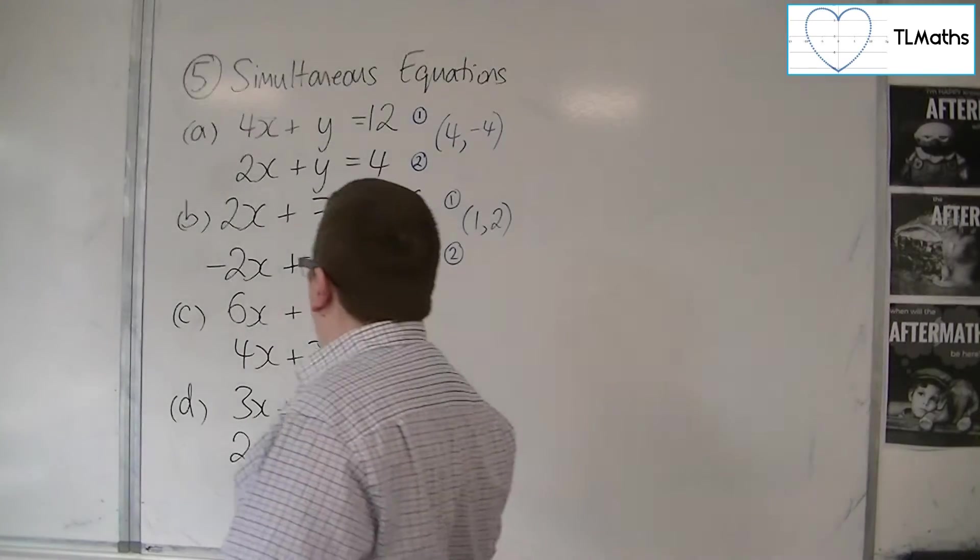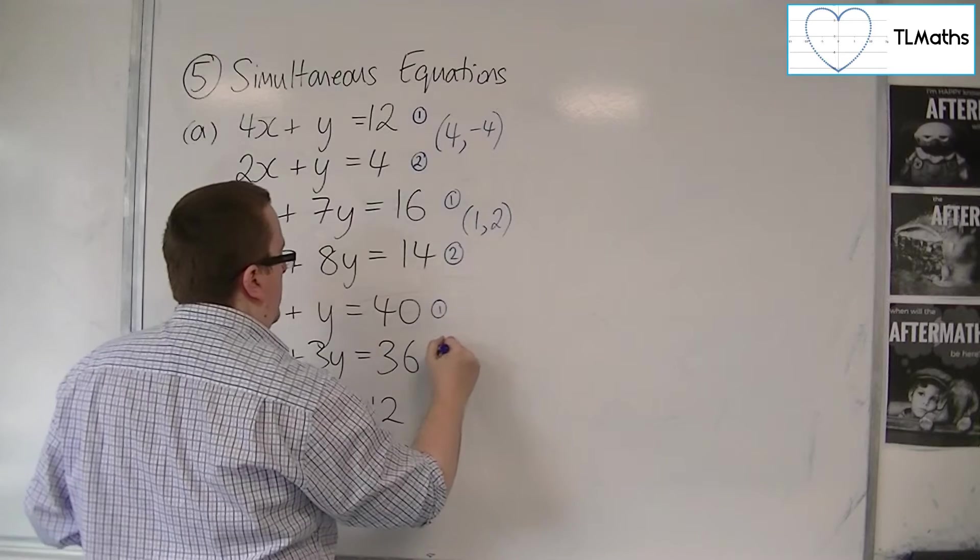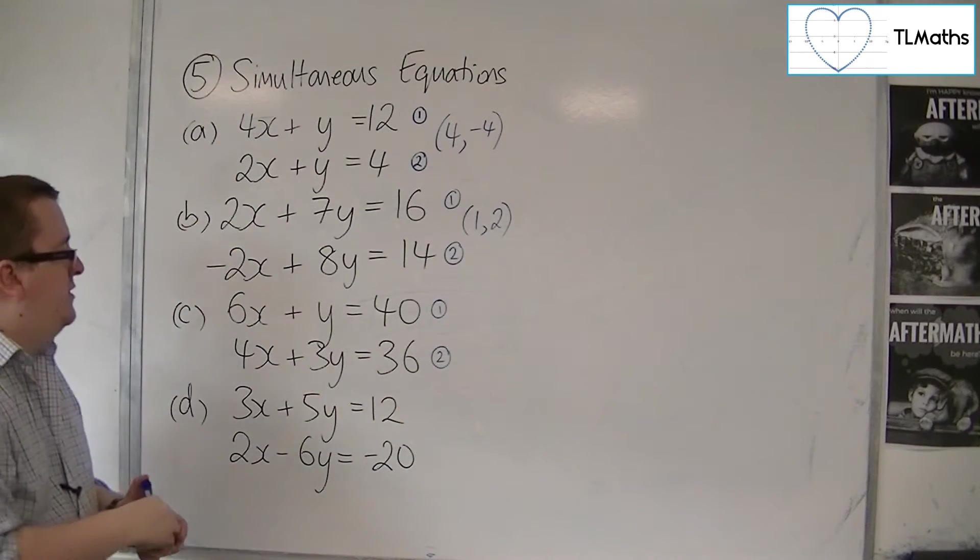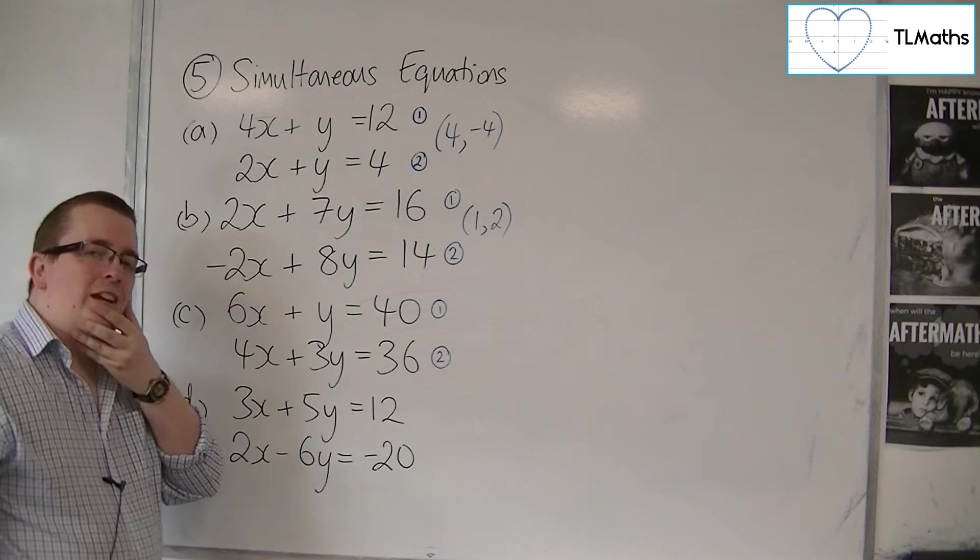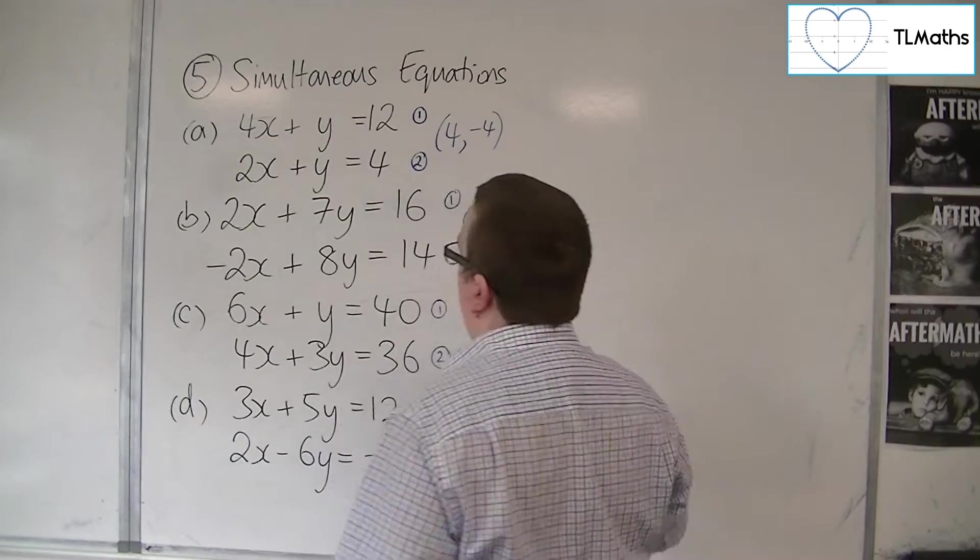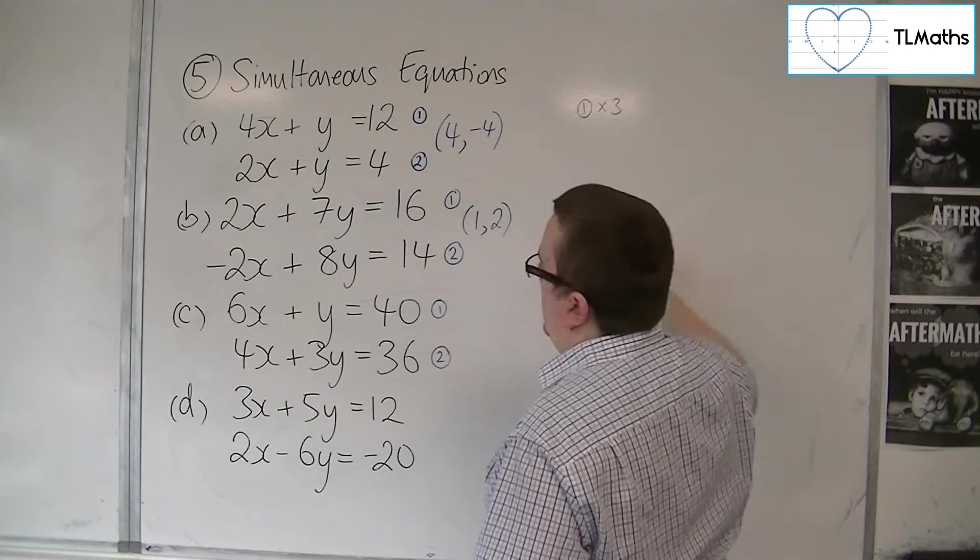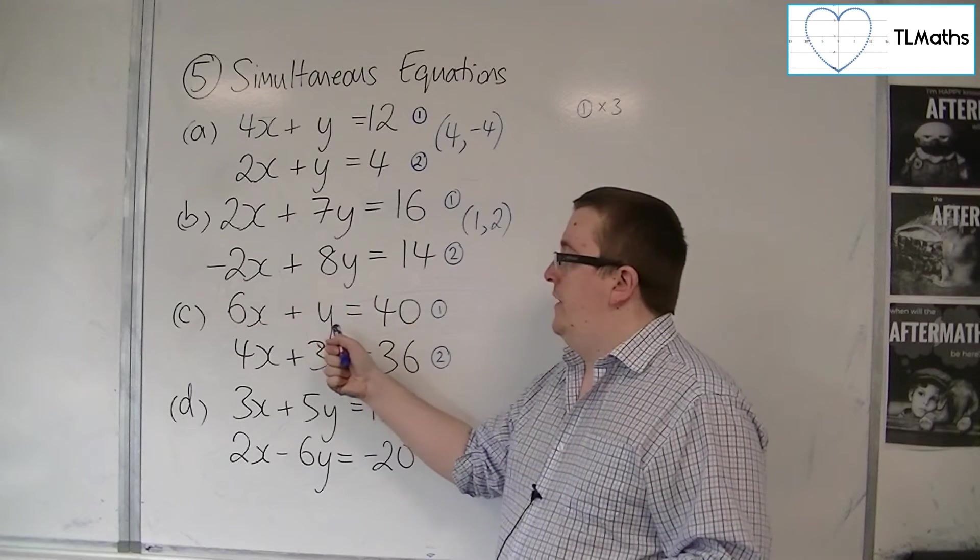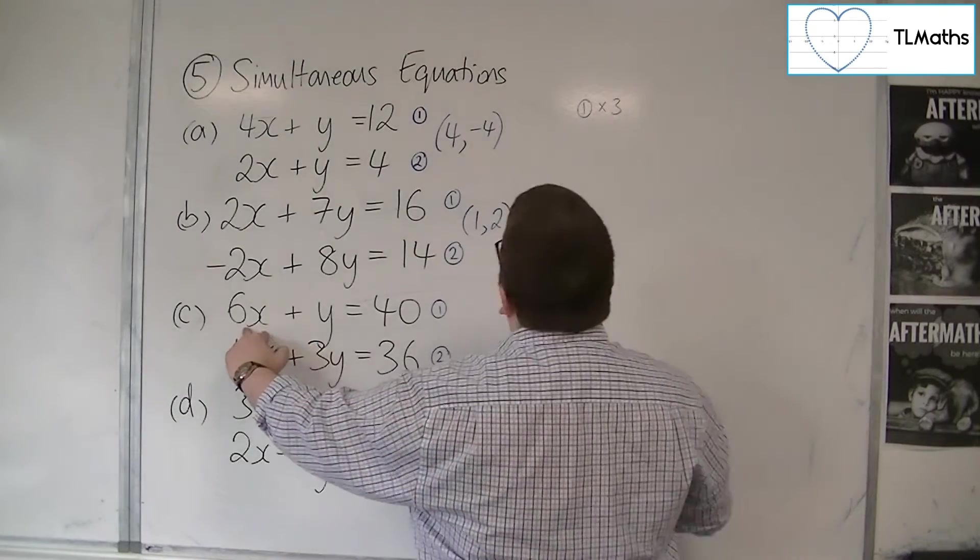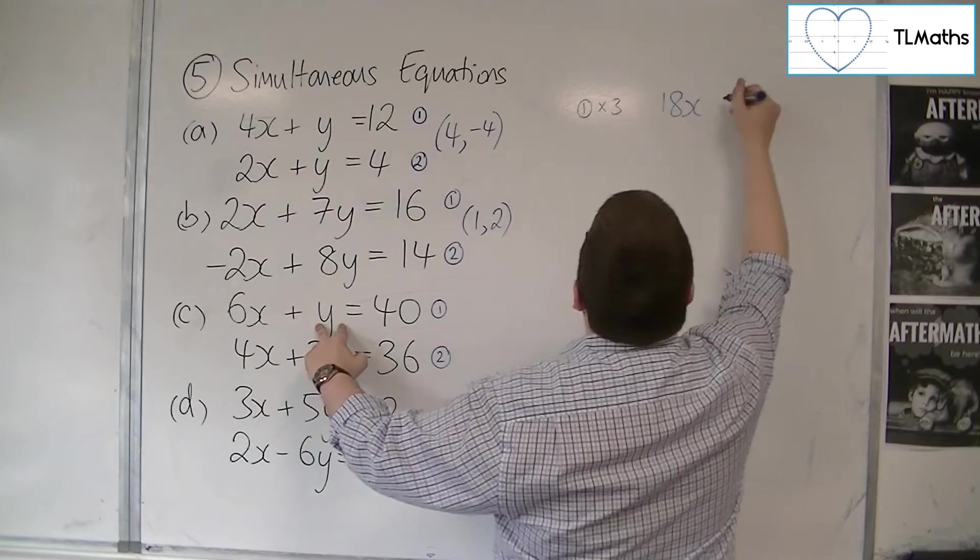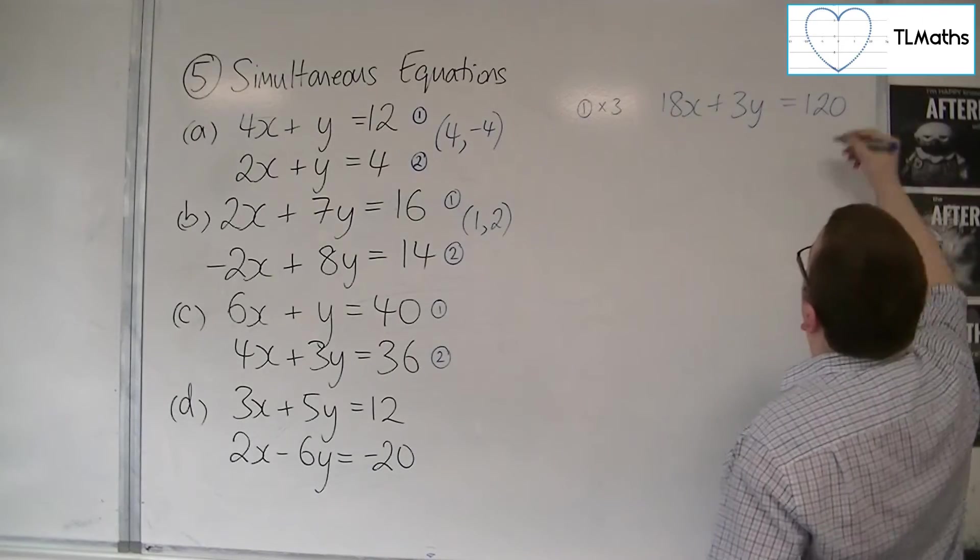Now for c, we have 6x plus y equals 40 and 4x plus 3y equals 36. We'll number them again. Now it's not so straightforward now because I can't just add these two equations together and expect a variable to cancel. And exactly the same as subtraction. So I've got to do a little bit of manipulation. So what I'm going to do is I'm going to multiply equation 1 by 3. Now the reason why I'm going to do that is because that will allow me to get a 3y. And then I've got a 3y and a 3y allowing me to subtract one equation from the other. So 6x times 3 is 18x. Y times 3 is 3y. 40 times 3 is 120. This is a new equation. So I'm going to call this equation number 3.